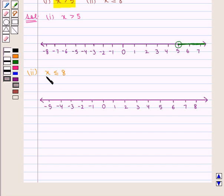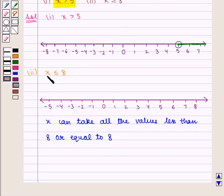Here x can take all the values less than 8 or equal to 8. So we mark 8 on the number line with a closed dot, and integers to the left of 8 are to be shaded.